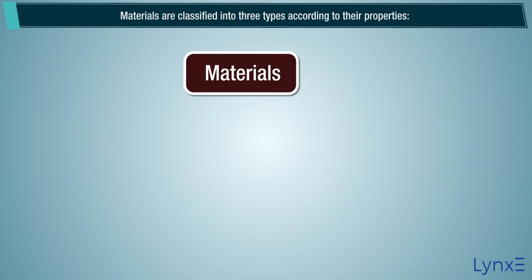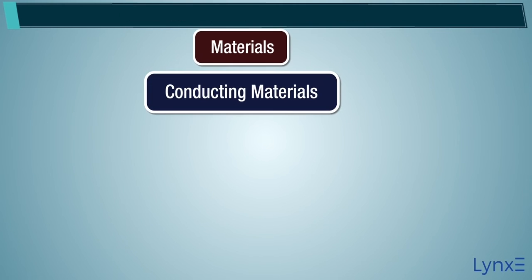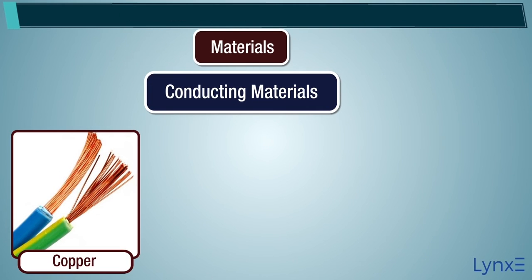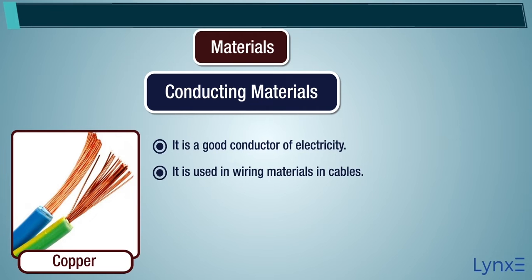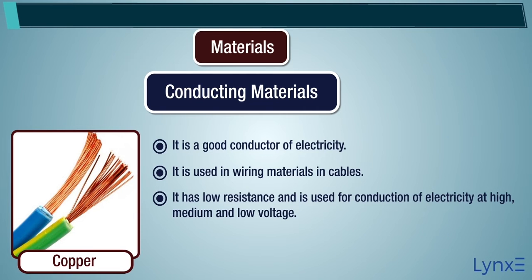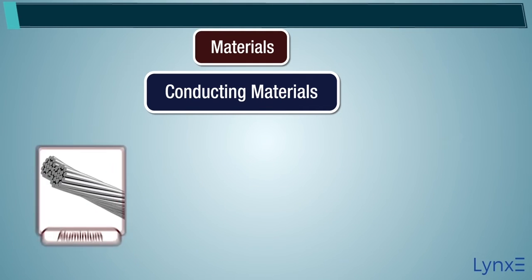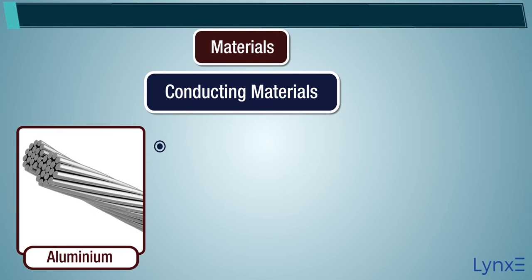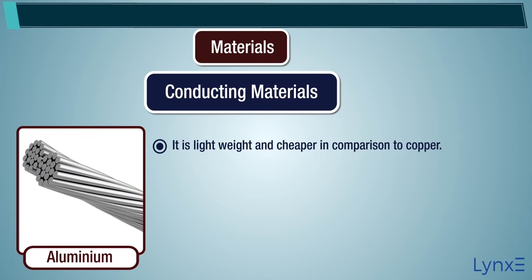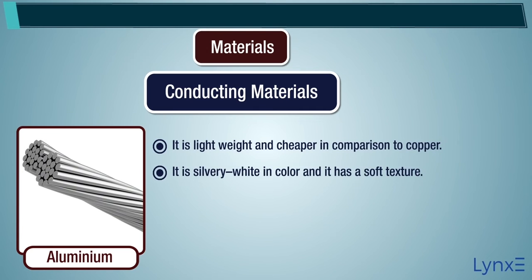Wiring materials are classified into three types according to their properties. Conducting Material — Copper: It is a good conductor of electricity, used in wiring materials and cables. It has low resistance and is used for conduction of electricity at high, medium, and low voltage. Aluminum: It is lightweight and cheaper in comparison to copper. It is silvery white in color and has a soft texture.